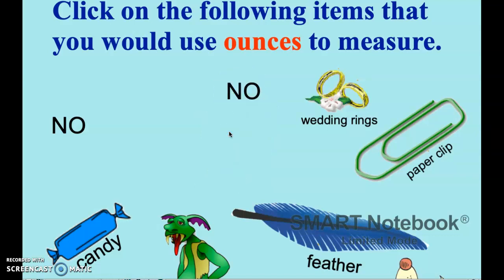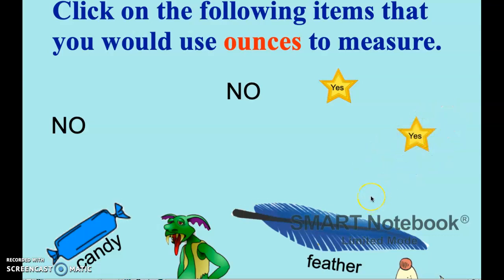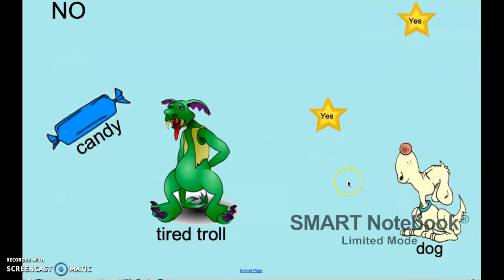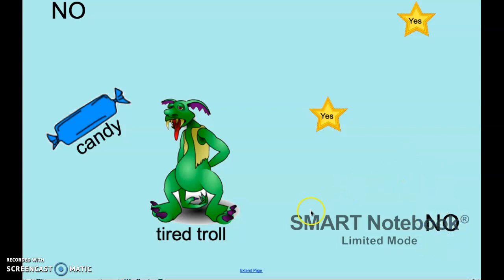Wedding rings — I'm going to say they are light enough to not be pounds or tons, so yes to wedding rings for ounces. A paper clip is definitely pretty light, so yes to that for ounces. What about a feather? I would say yes because it's pretty light. What about this dog? I would say probably not because a dog weighs too much, even if it's a small one. That tired troll is looking pretty hefty, so I'm going to say no.